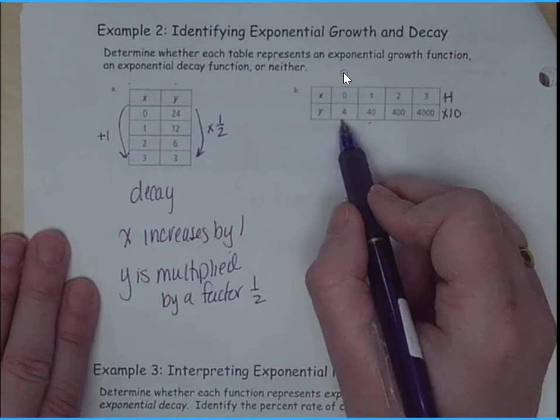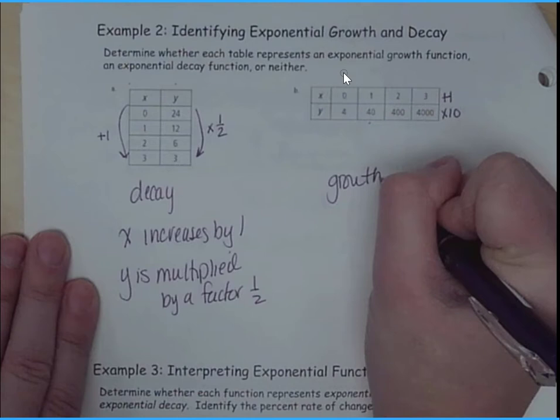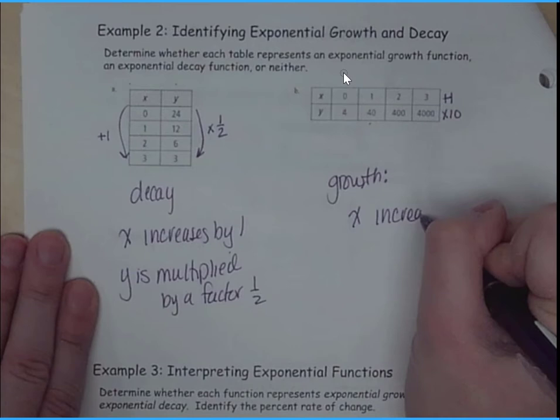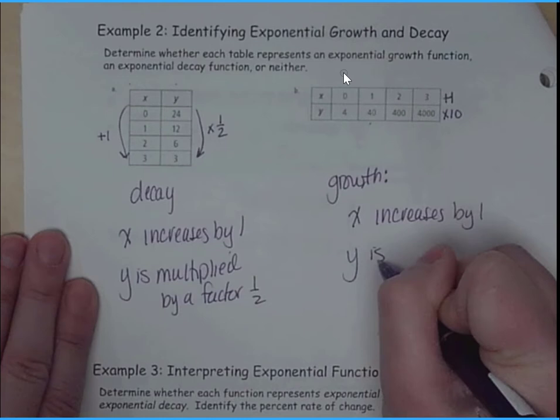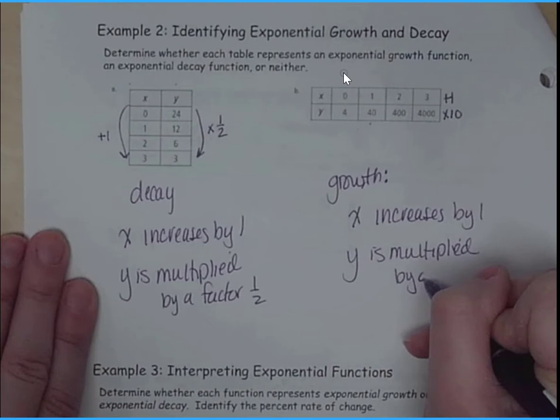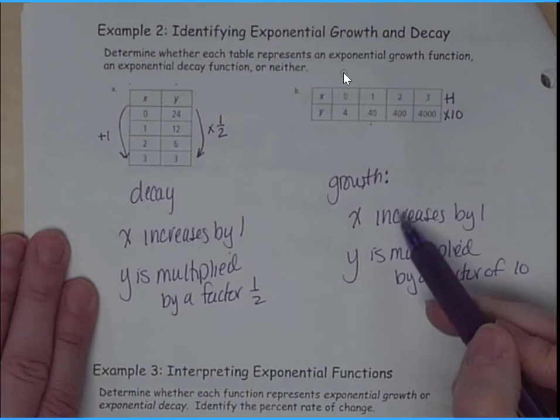So how do I know? So x, again, increases by 1. So we know we're dealing with some sort of function. And then y is multiplied by a factor of 10. So we've got a growth because our y is increasing. We have a decay because our y is decreasing.